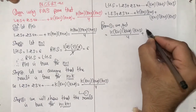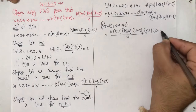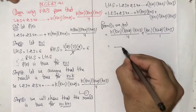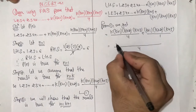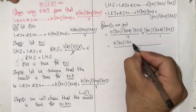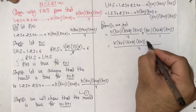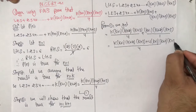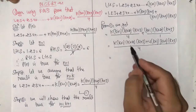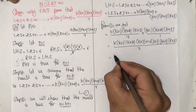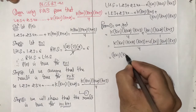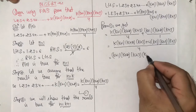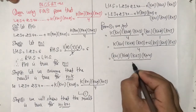This gives us k(k+1)(k+2)(k+3)/4 + (k+1)(k+2)(k+3). Taking LCM = 4: [k(k+1)(k+2)(k+3) + 4(k+1)(k+2)(k+3)] / 4. Taking (k+1)(k+2)(k+3) common: (k+1)(k+2)(k+3)(k+4) / 4.